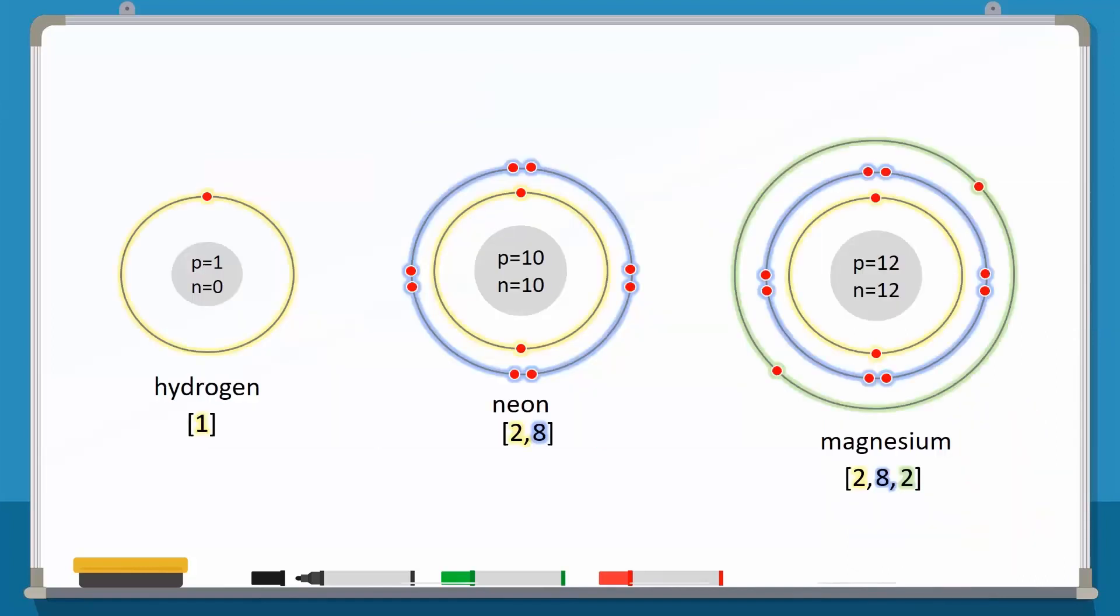Let's look at some examples of electronic configuration. This is hydrogen. It has one proton which means it has one electron.